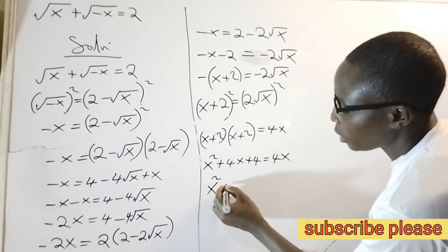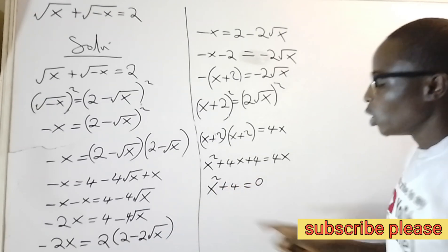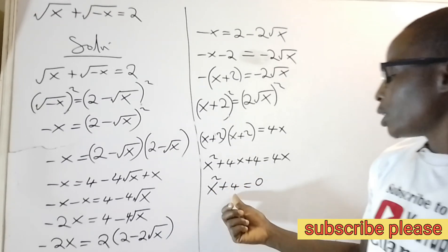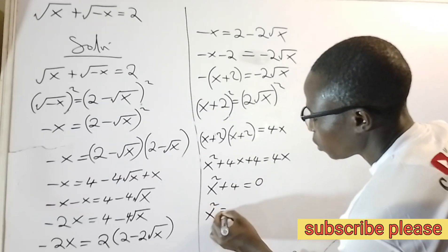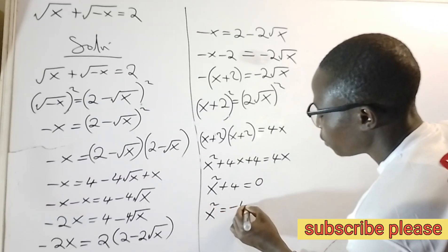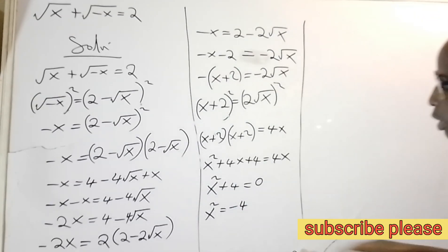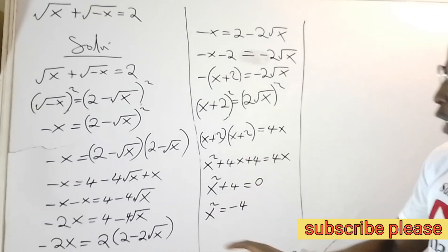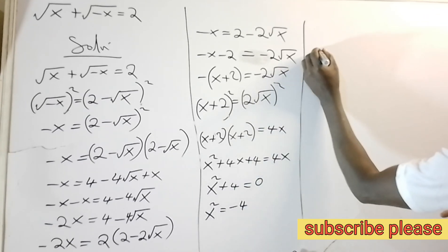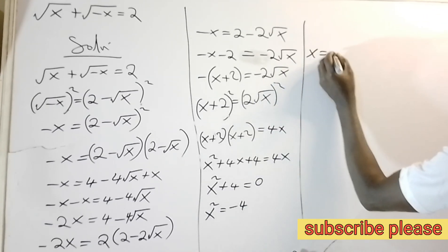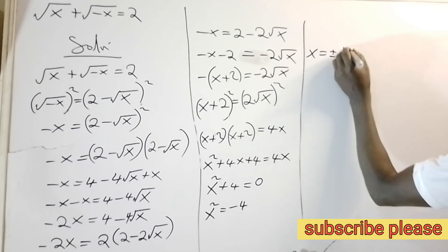I'm left with x squared plus 4 equals 0. I send the 4 to the right hand side: x squared equals negative 4. Since I'm looking for x and not x squared, I take the square root of both sides, giving plus or minus square root of negative 4.